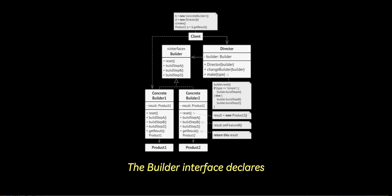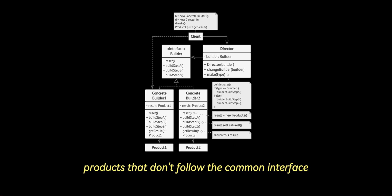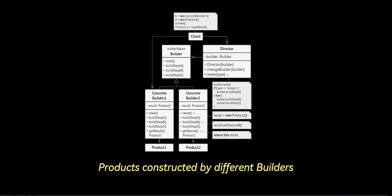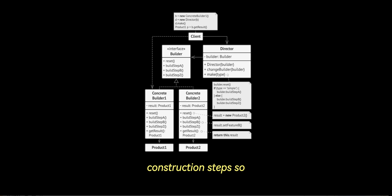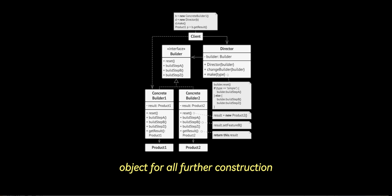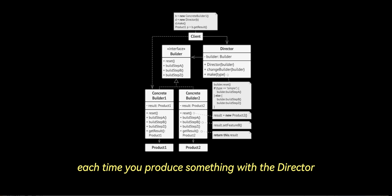Now let's take a look at the structure. The builder interface declares product construction steps that are common to all types of builders. Concrete builders provide different implementations of the construction steps, and may produce products that don't follow the common interface. Products are the resulting objects, and products constructed by different builders don't have to belong to the same class hierarchy or interface. The director class defines the order in which to call construction steps, so you can create and reuse specific configurations of products. The client must associate one of the builder objects with the director — usually done once via parameters of the director's constructor. However, there's an alternative approach where the client passes the builder object to the production method of the director, allowing a different builder each time you produce something.